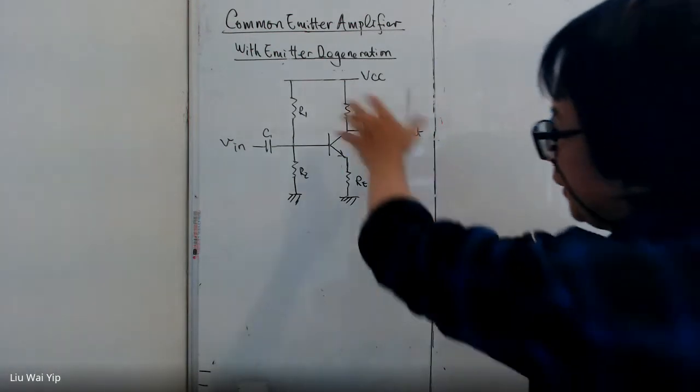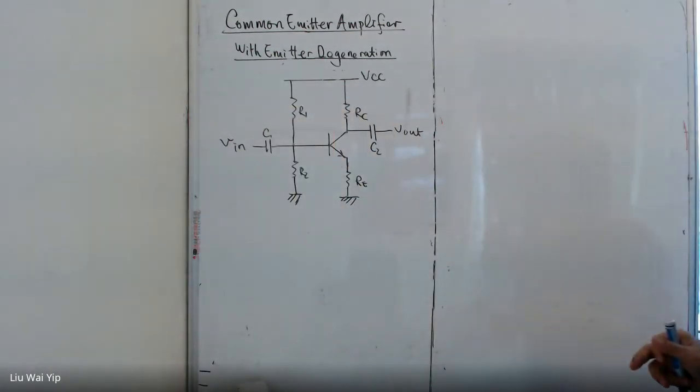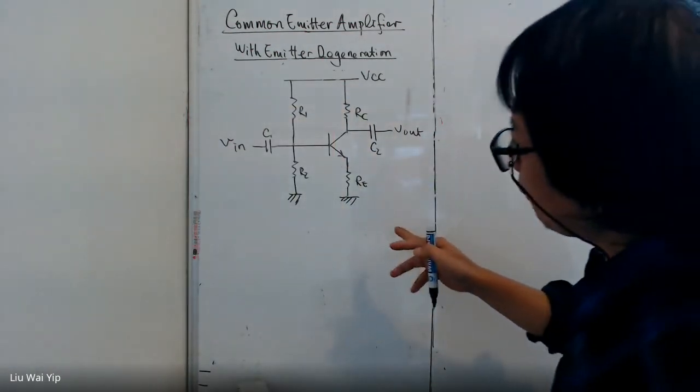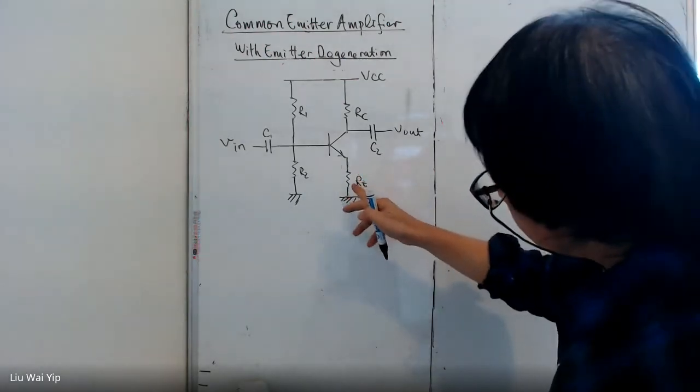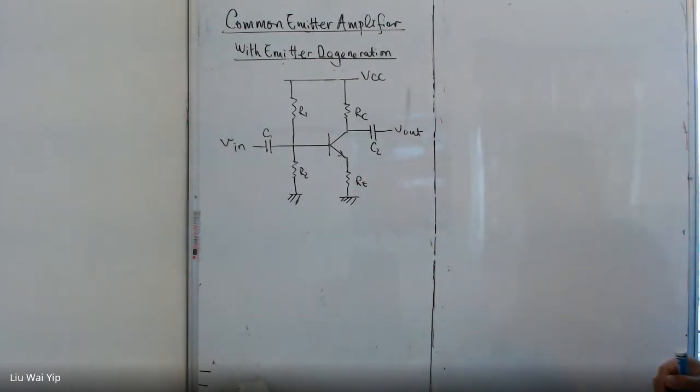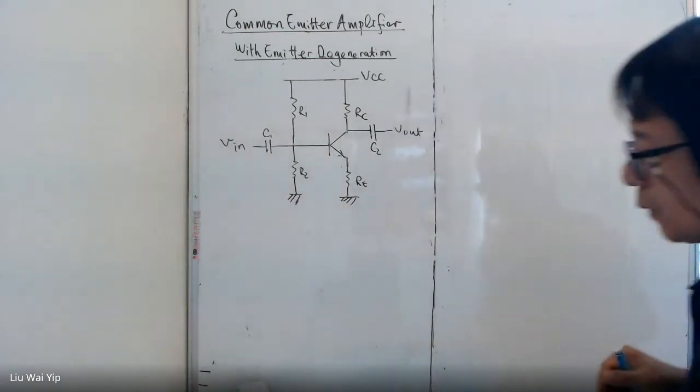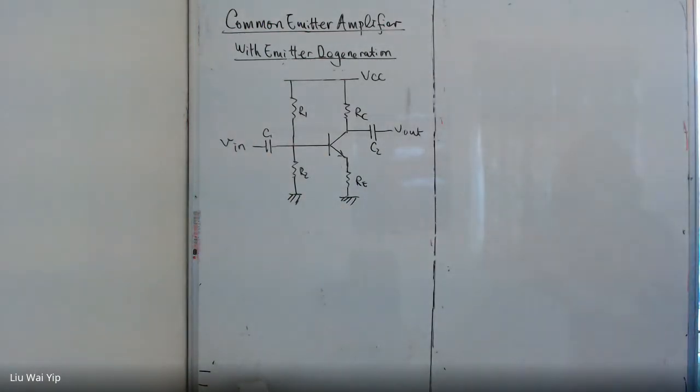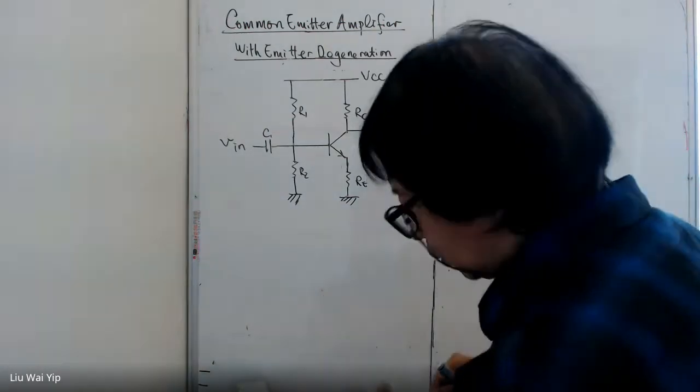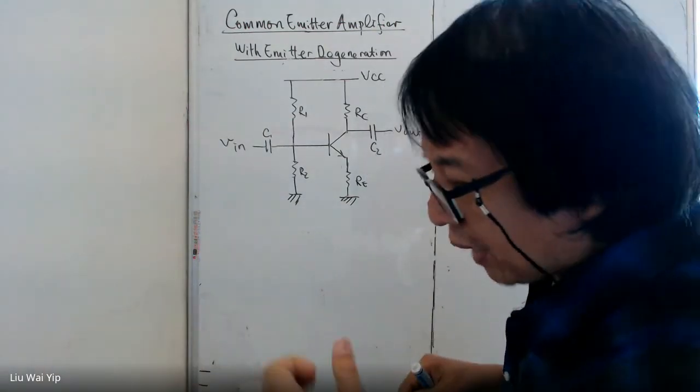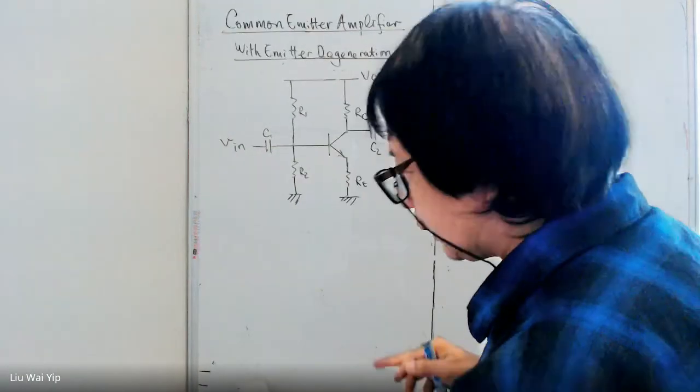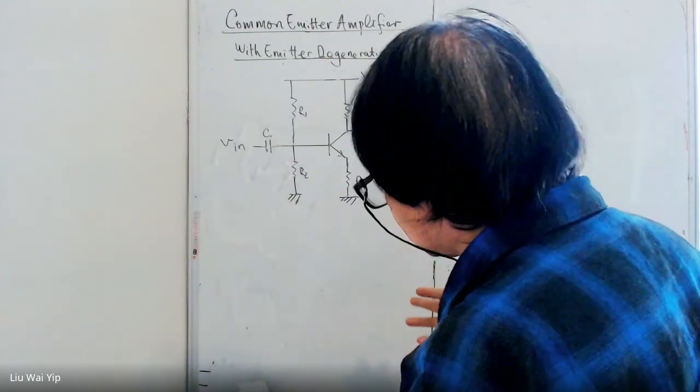We have an amplifier. The only exception here is the tail resistance. With the tail resistance here, the thing is a lot more complicated. It's complicated because you use pi model. But if you use a T model it's much easier.